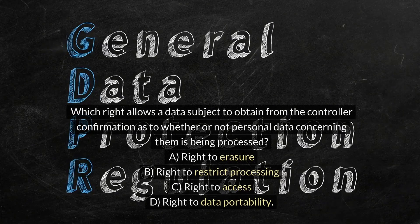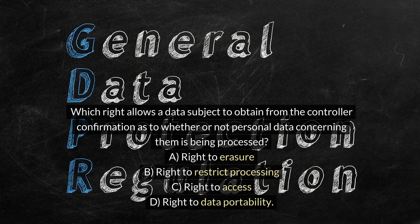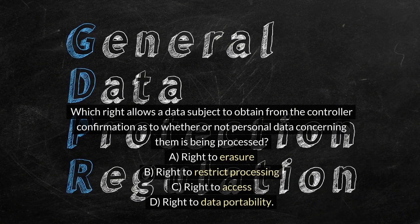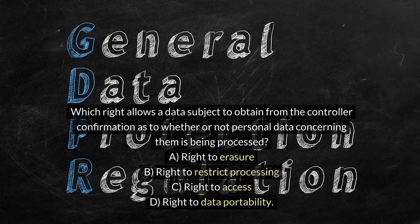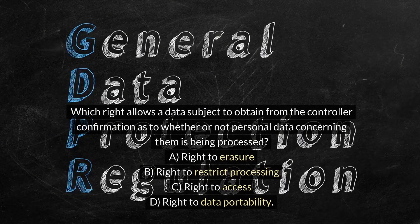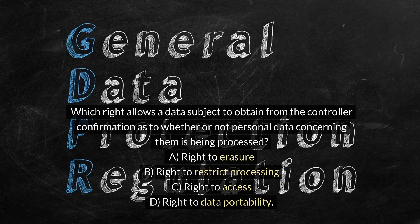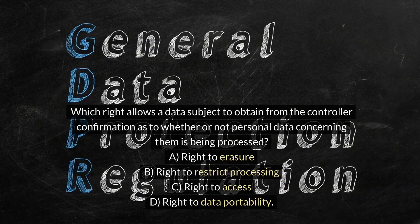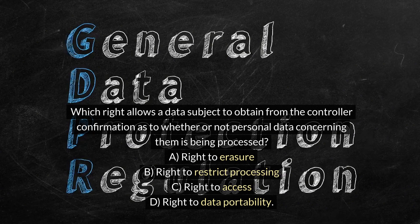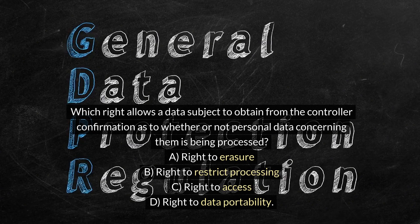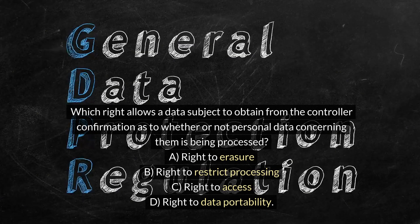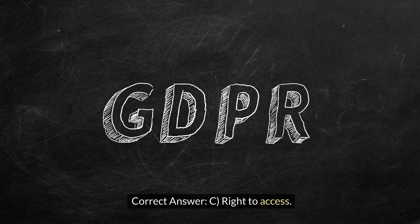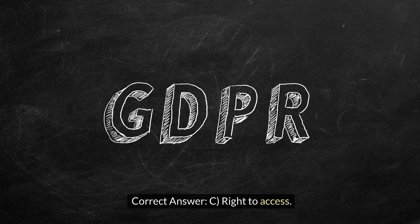Which right allows a data subject to obtain from the controller confirmation as to whether or not personal data concerning them is being processed? A. Right to erasure. B. Right to restrict processing. C. Right to access. D. Right to data portability. Correct answer: C. Right to access.